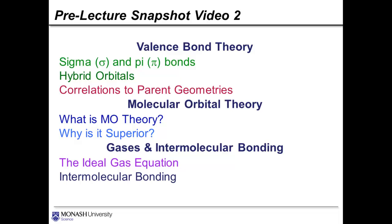And that can be broken up into these three groups here, valence bond theory. In this topic we'll talk about the difference between sigma and pi bonds, and then we'll introduce hybrid orbitals and make some correlations between these new kinds of hybrid orbitals, or hybridisation schemes, to the different parent geometries that we talked about during the VSEPR topic in week 3.